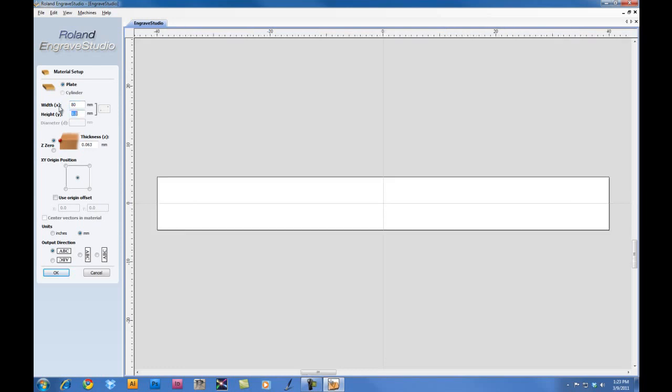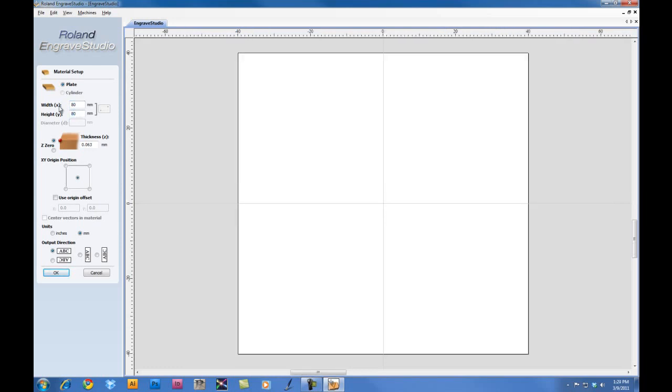Input 80 for the width, 80 for the height. And for the material thickness, set it for 2 millimeters. For the XY origin position, set it for the lower left-hand corner. Ensure that Use Origin Offset is unchecked and click OK.